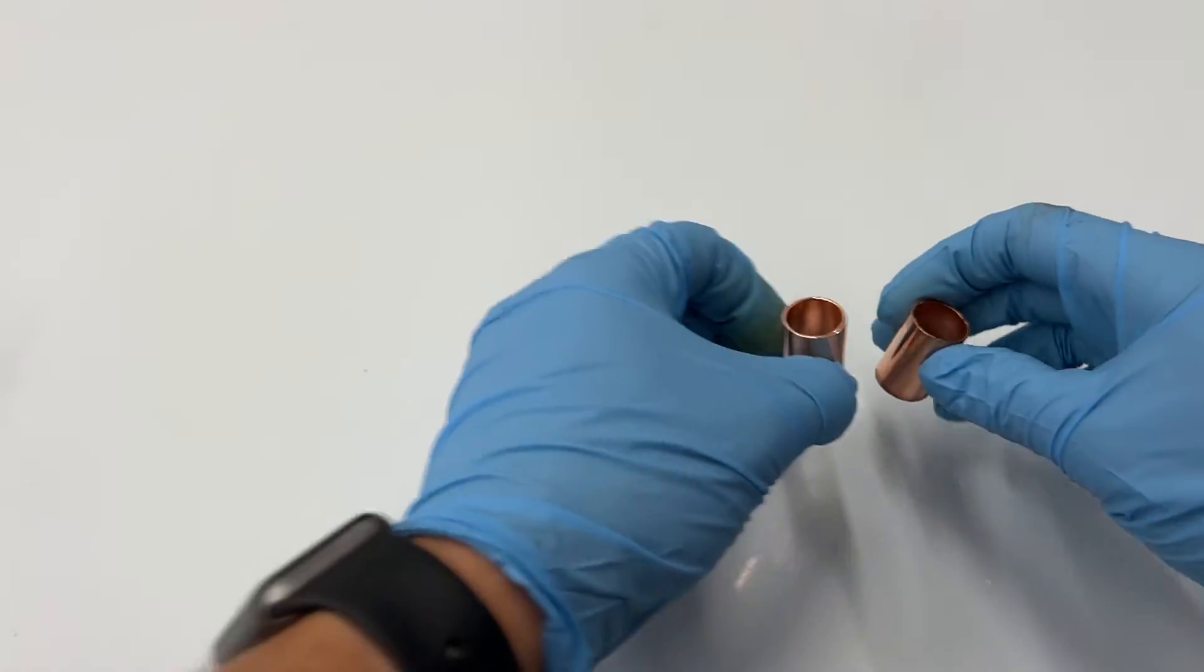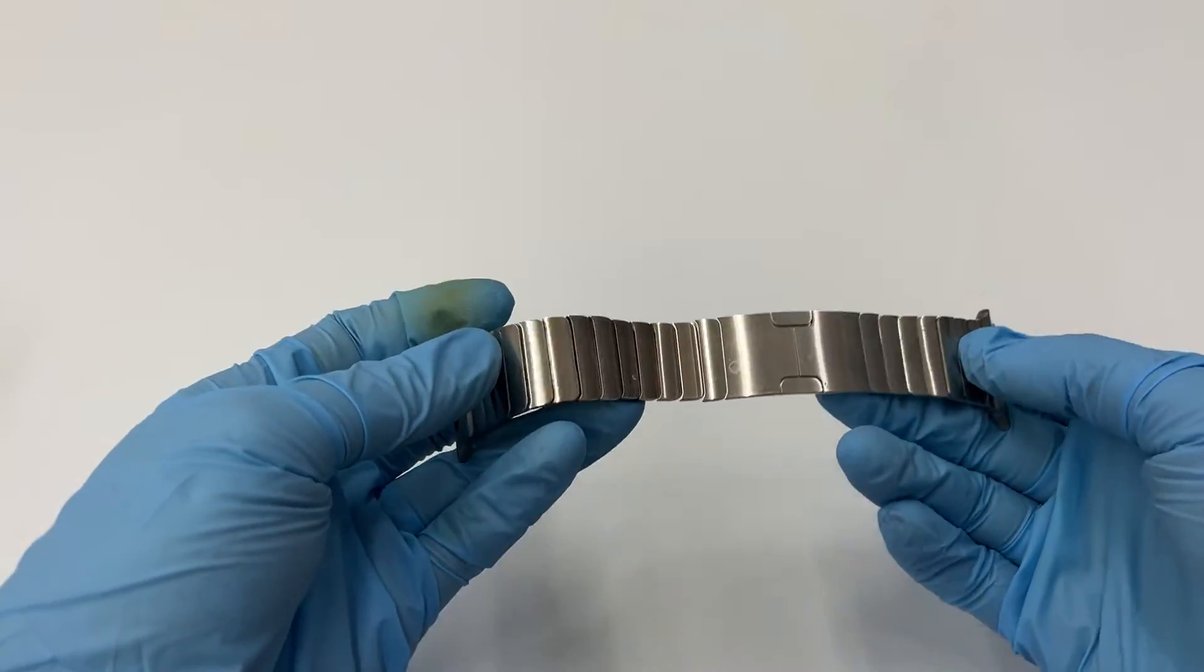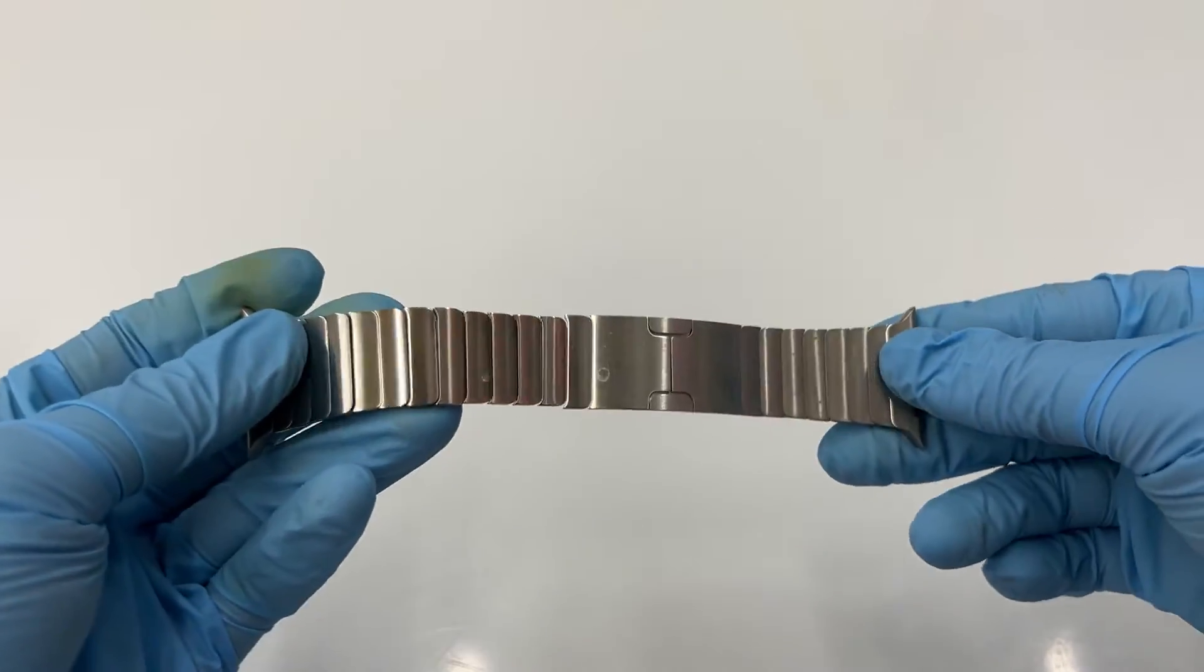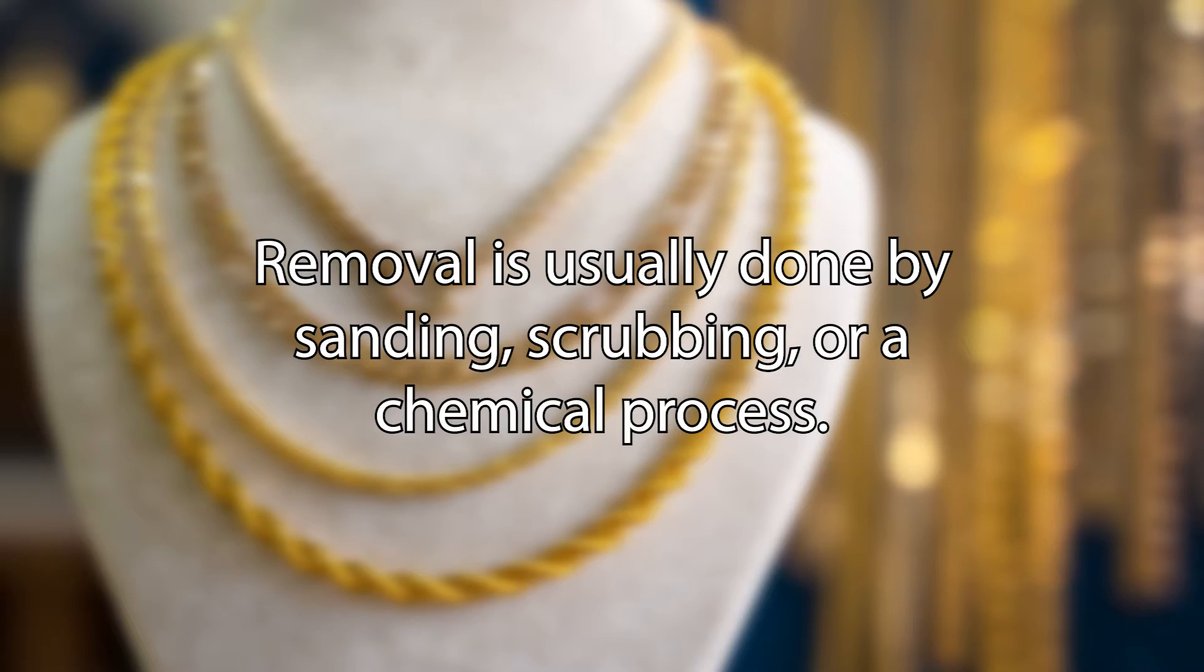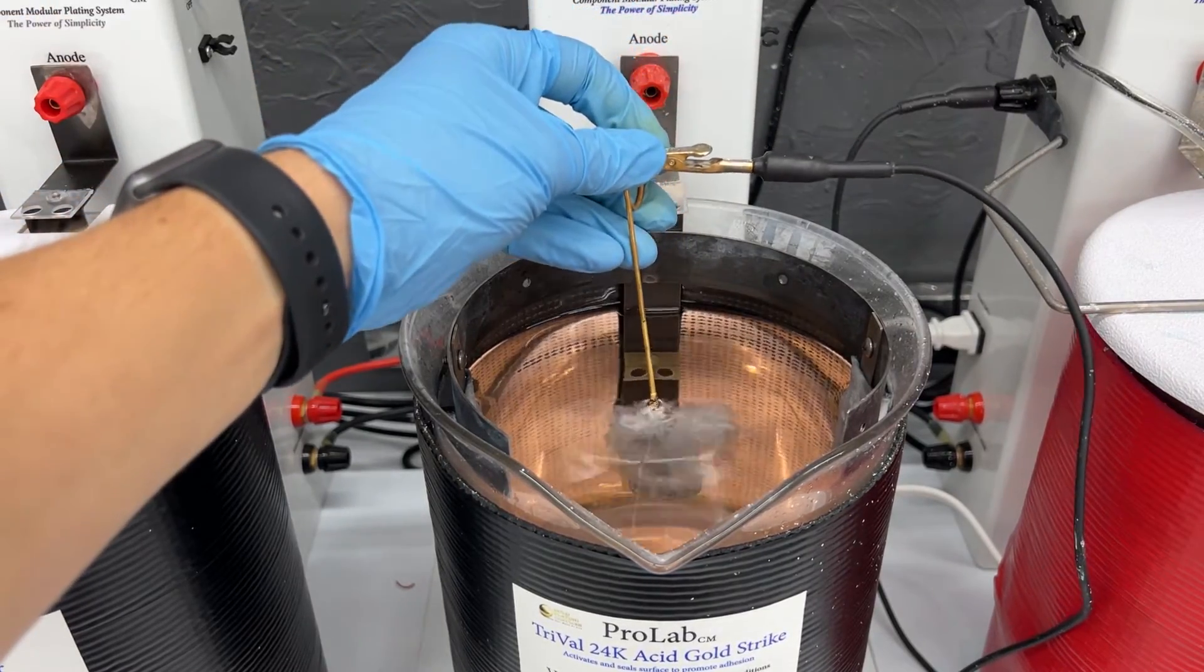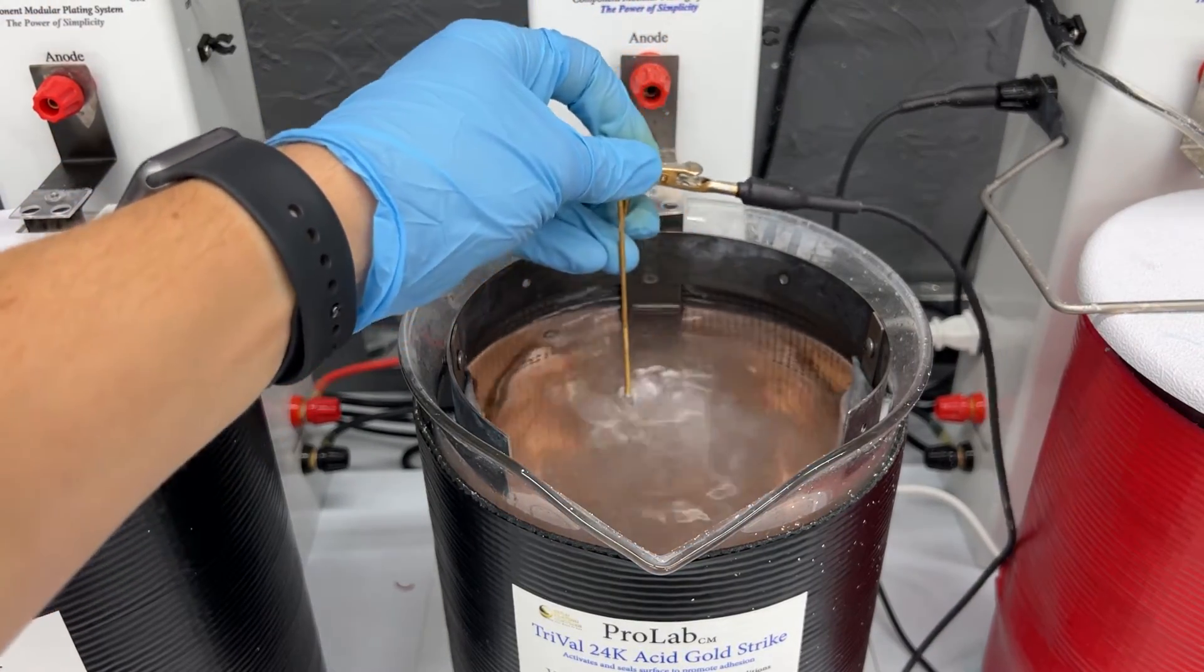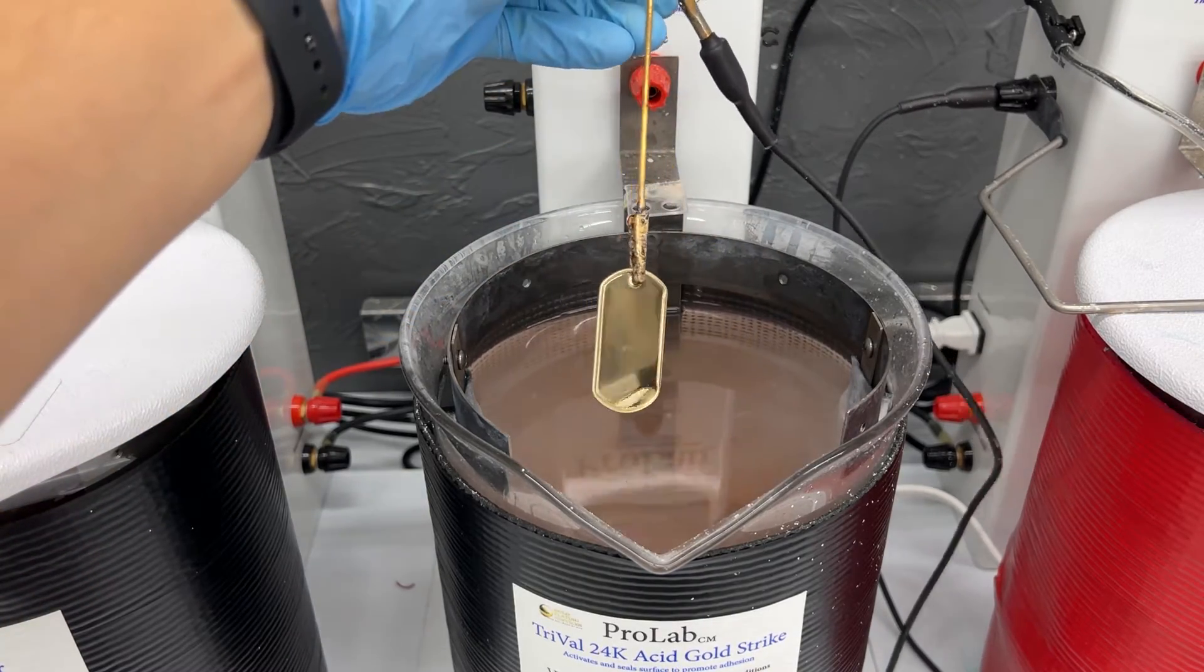Instead prep less items at a time and quickly move on through the plating process. Another thing to consider during your surface prep step is if your items have been heat treated. If they have then the normal process for that metal type may not work because the items can become unaffected by our surface activators. The heat treated surface might need to be removed. Removal usually is done by sanding, scrubbing, or a chemical process. With some metals using our trival acid gold strike solution is sufficient to remove the heat treated surface as well as activate the underlying metal but some metals may require more effort.